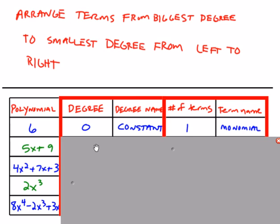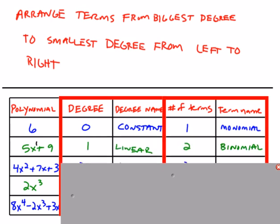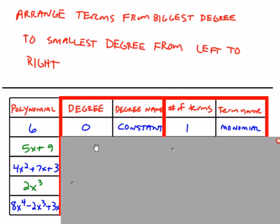On the second line, 5x plus 9, the degree, the biggest, we do have a variable, but since I don't see a power, that means that the biggest power is really just one. So there, we have a first degree, which the word that's used for first degree is linear. And if there's two terms, that's a binomial. So this second example is a linear binomial.